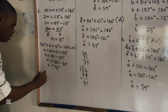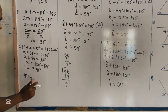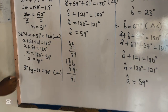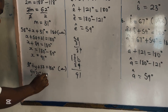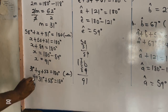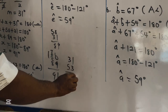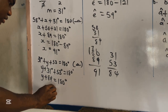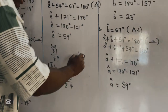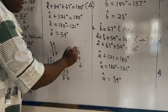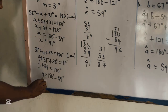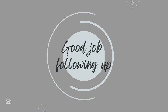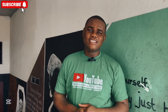To find Y, we have 31 degrees plus Y plus 53 degrees equals 180 degrees — angle on a straight line. So Y plus 31 plus 53 equals 180 degrees, meaning Y equals 180 minus 84, which gives us 96 degrees.